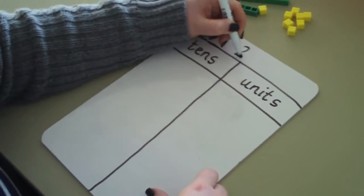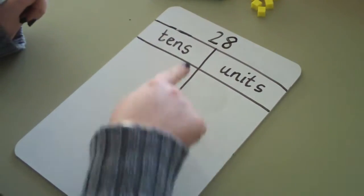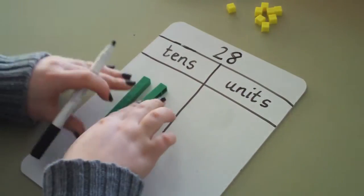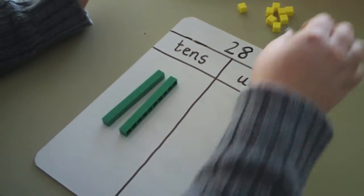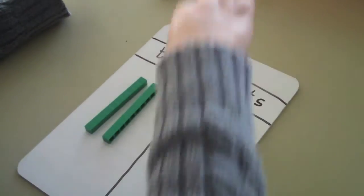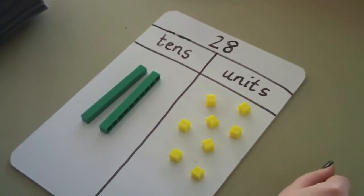Next we're going to look at place value using deans. For example, number 28. 28 has got 2 tens which make 20 and 8 units. 1, 6, 7, 8. Together they make 28.